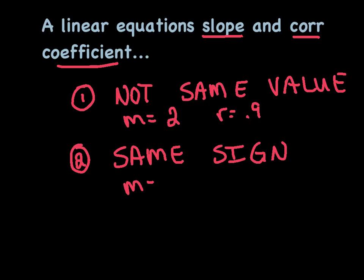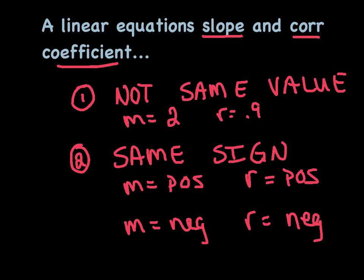If the slope is positive, then we do know that the R value is guaranteed to be positive, or vice versa. If the slope of a linear equation is negative, then the R value is also guaranteed to be negative. So that relationship right there is always in play. They'll have the same sign, that's a guarantee.